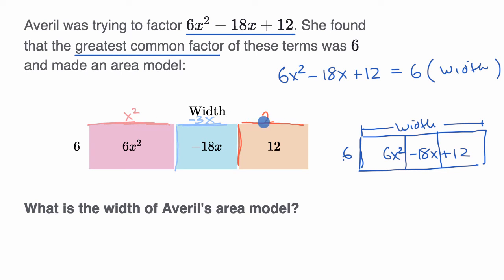And now we know what the total width is. The total width is going to be our x² plus our -3x plus our 2. So the width is going to be x² minus 3x + 2. So we have answered the question.